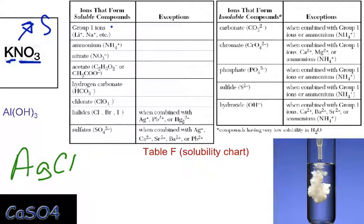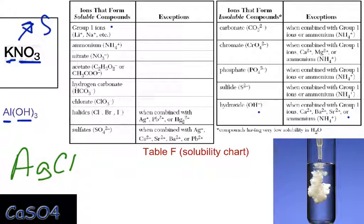Our next compound is aluminum hydroxide. You can look for aluminum, but you don't see it — no problem. You go to the next ion: hydroxide. Hydroxide just so happens to be in the insoluble column. Before you write insoluble down, you check your exceptions. We see the exceptions are group one, calcium, barium, strontium, and ammonium. There's no exception for aluminum, so we can safely say that aluminum hydroxide is insoluble.